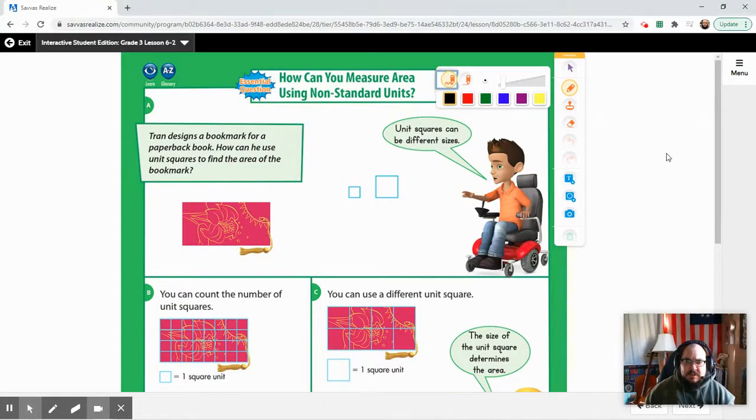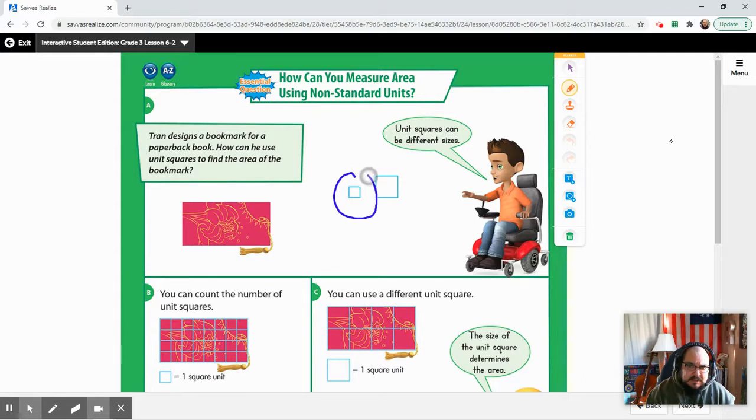Okay, so today we're going to go over lesson 6.2. This is measuring area using non-standard units. What they mean is this right here, our square unit. Let's change that color. It's this little square right here. But a non-standard unit might be a square of a different size, so unit squares can be different sizes.